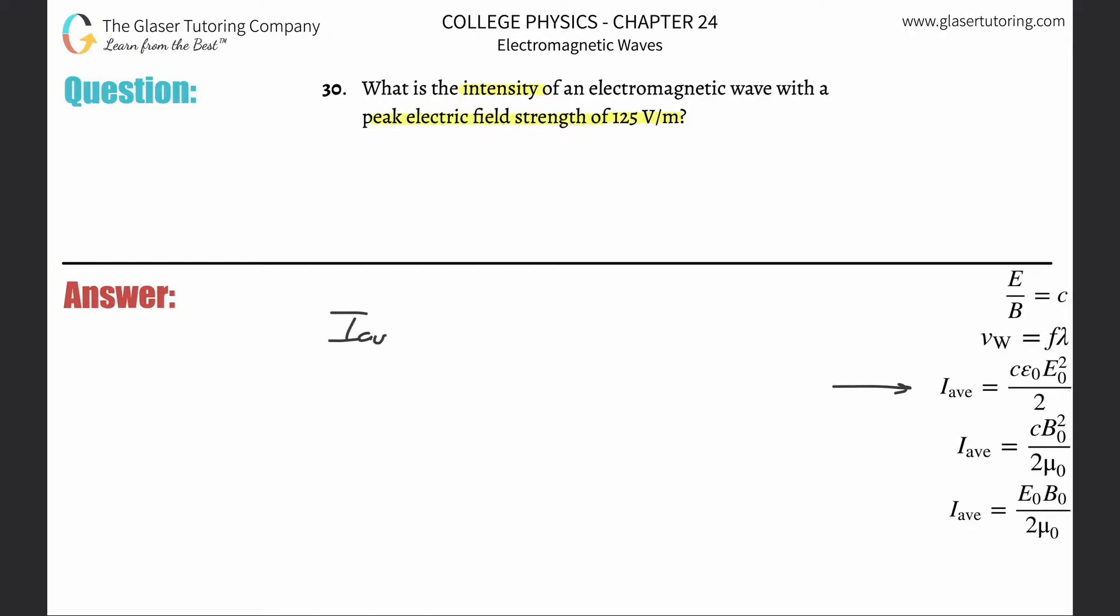It says that the average intensity I, don't confuse that with current, is going to be equal to the speed of light multiplied by the permittivity of free space multiplied then by the peak electric field strength squared, all then divided by 2.